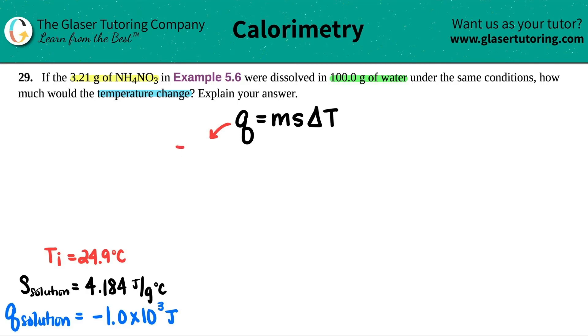Now, if we're keeping everything under the same conditions, that means that this Q is going to be the same. It's going to be the negative 1.0 times 10 to the third joules. Now, the mass is going to change a little bit. For solutions, we'll just add up the total mass of the solution.